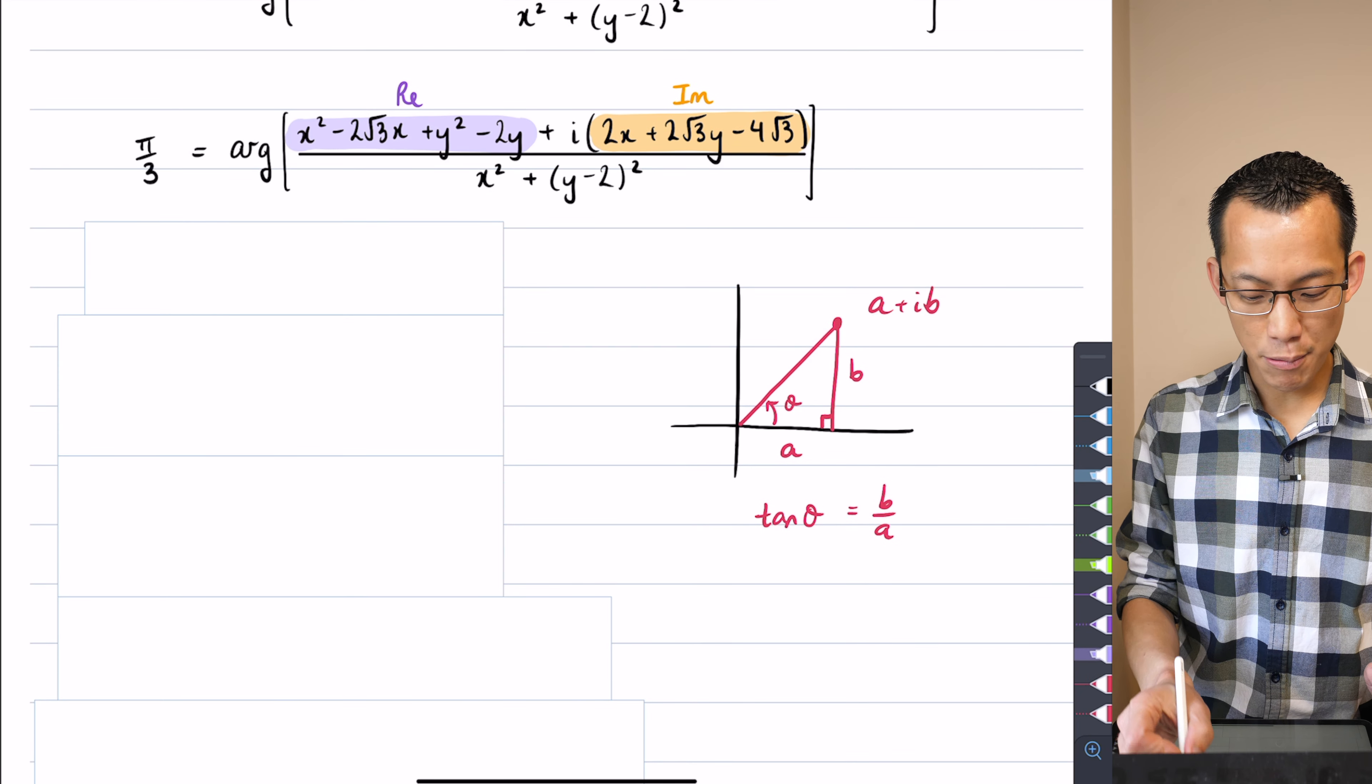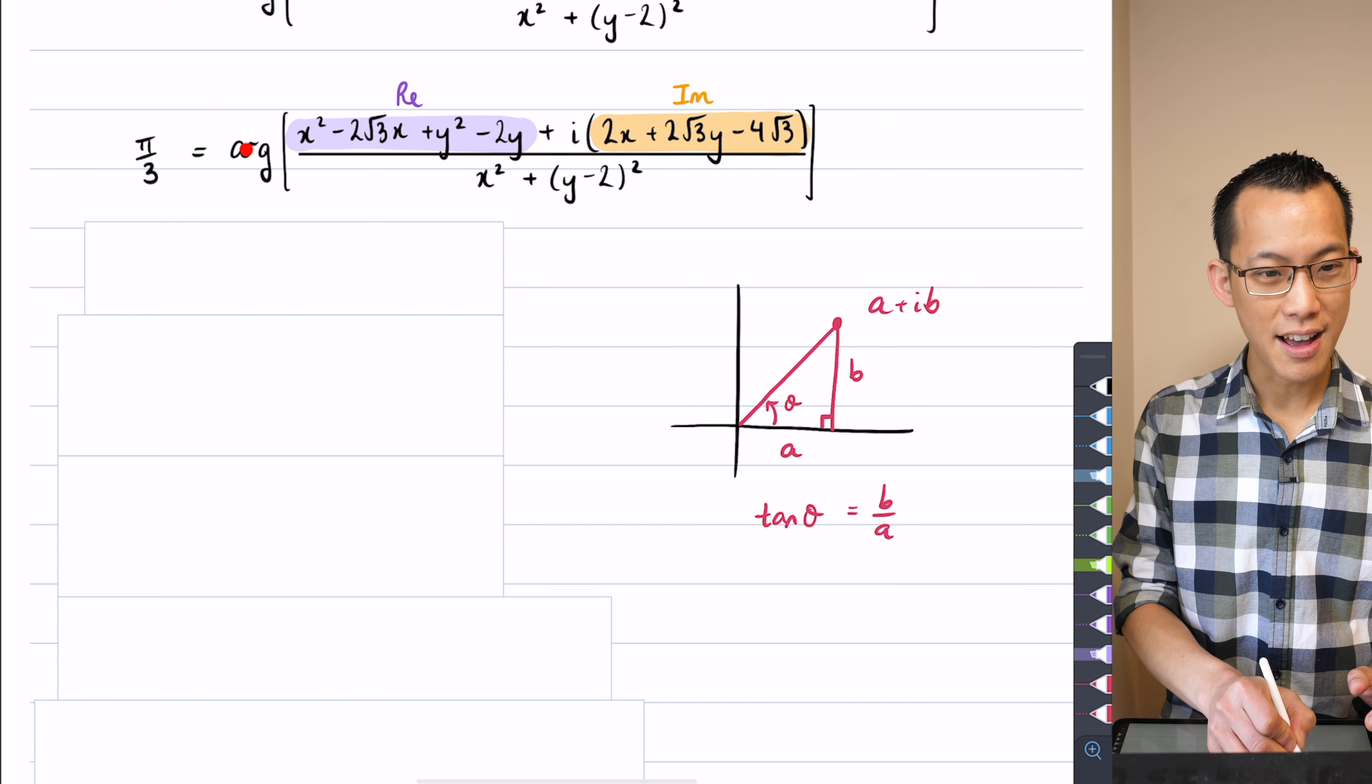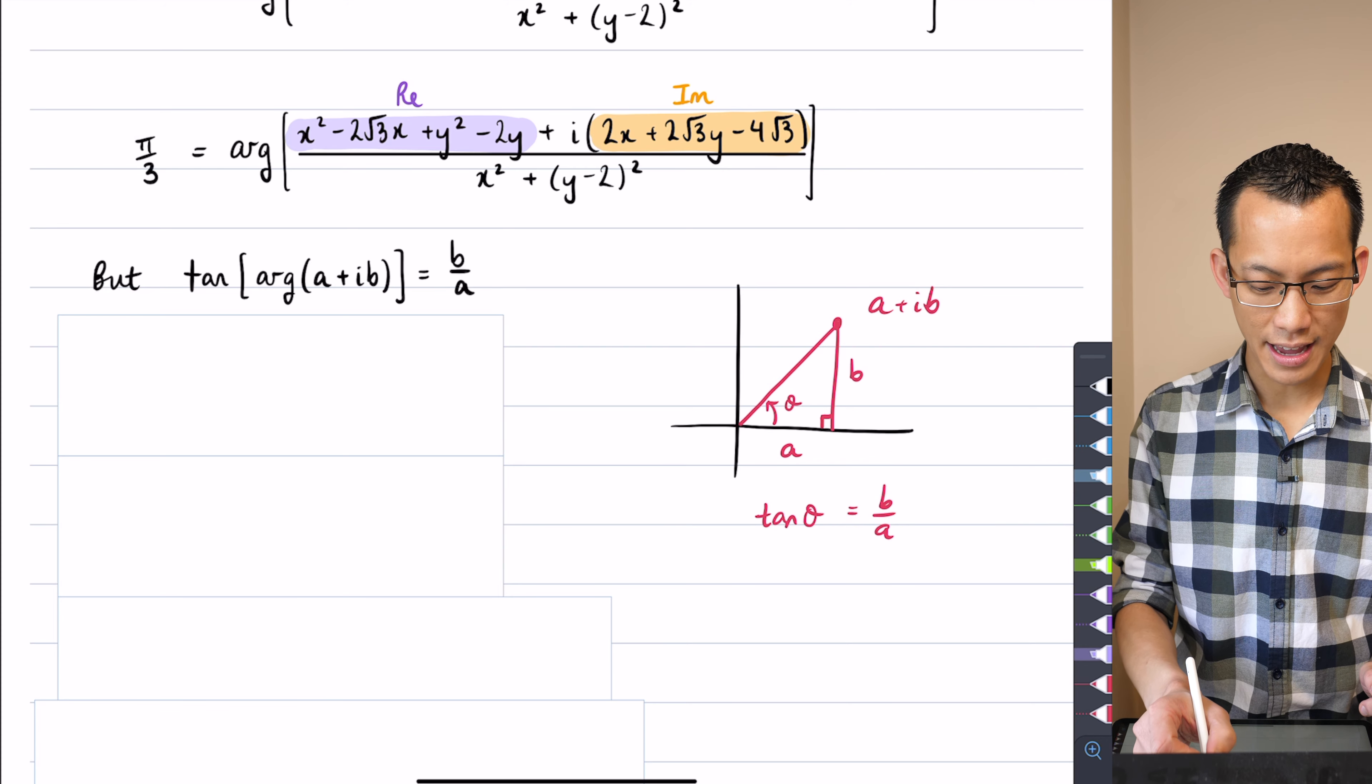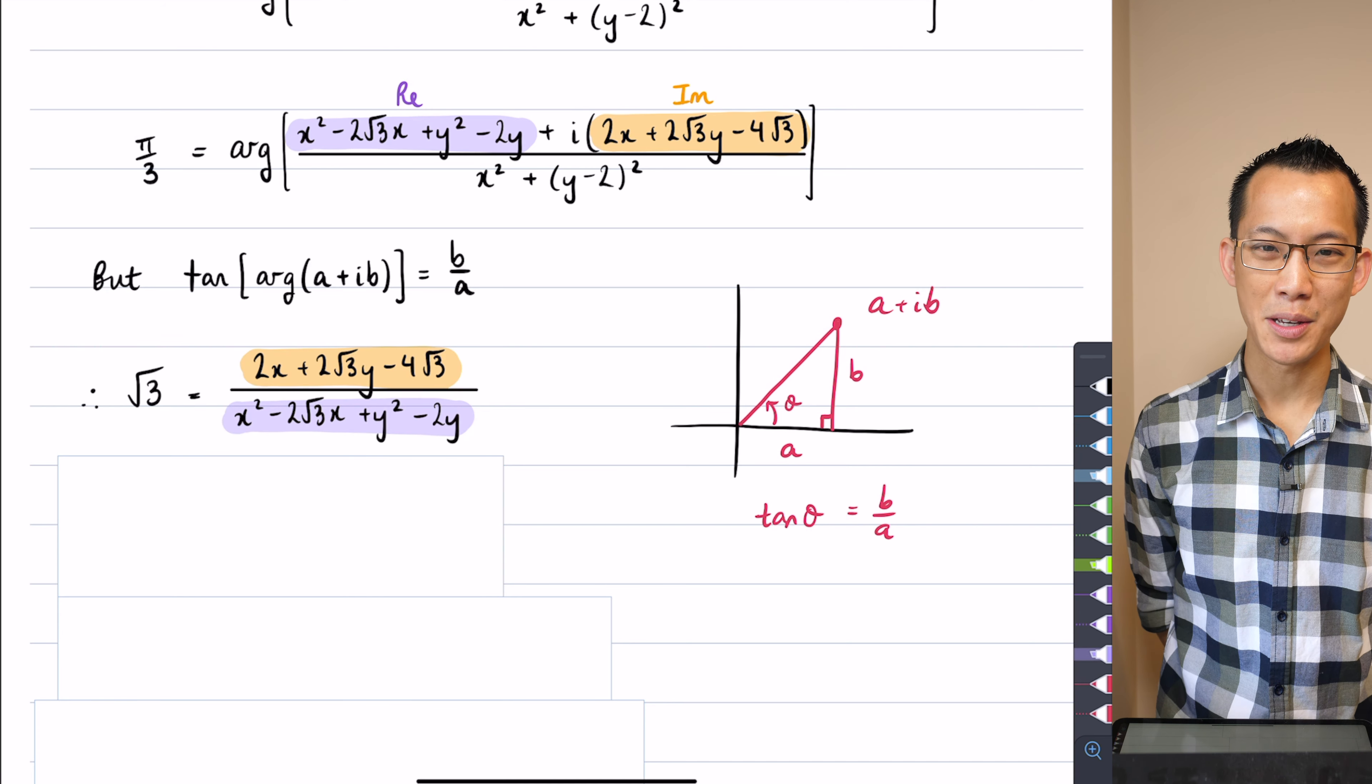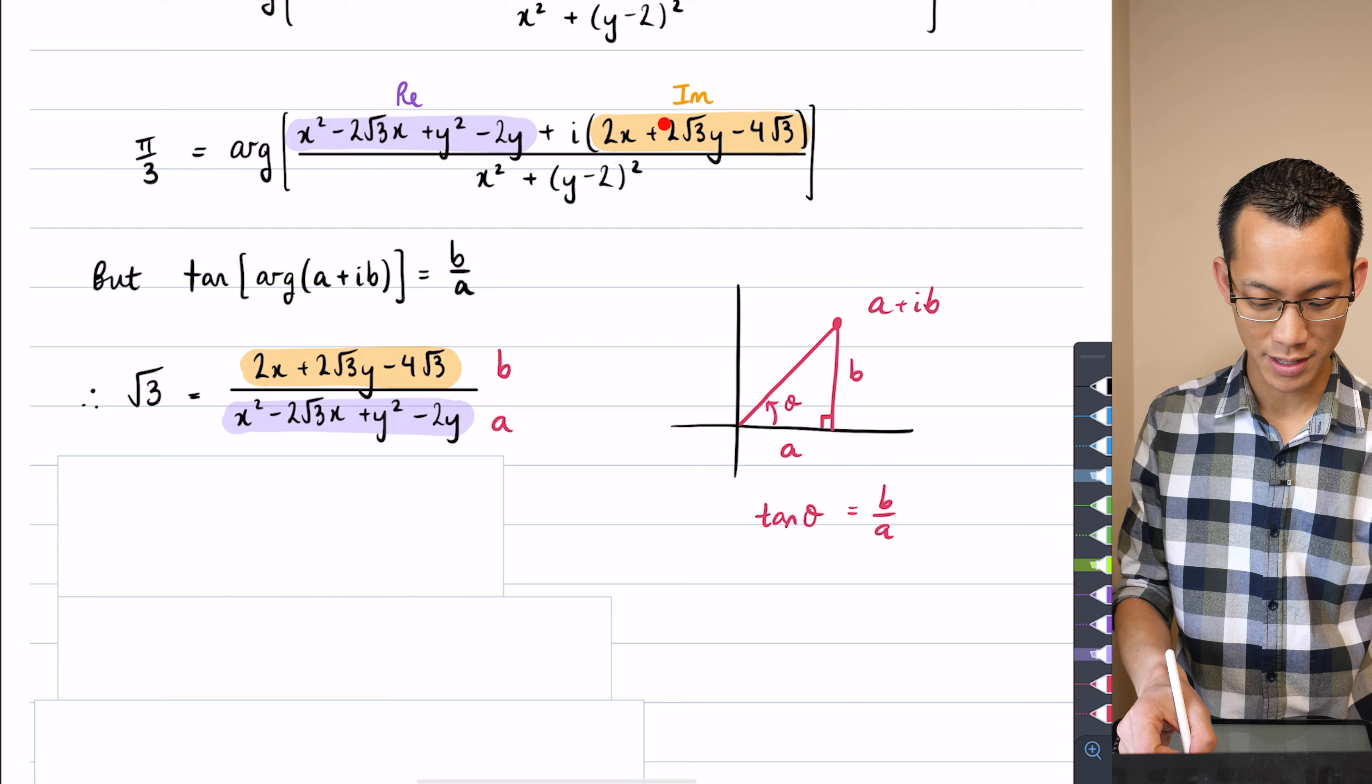In this particular example, I don't have a nice, neat a plus ib. This monstrosity here in purple is a, and this here in orange is b. They're my real and my imaginary components. So what I'm going to do from this line to the next line is I'm going to take advantage of this tan relationship over here. I'm going to take tan of both sides. And just be careful, I can do this because I've got everything in the first quadrant, so things are going to be positive. So on the left hand side, tan of pi on three is equal to root three. We've seen this before. And on the right hand side, this is the b on a that I was talking about. There's b and there's a.